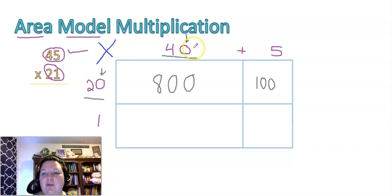1 times 40. Anything times 1 is the number itself. So 40 times 1 is 40. Then 1 times 5, same thing. Now what am I going to do?